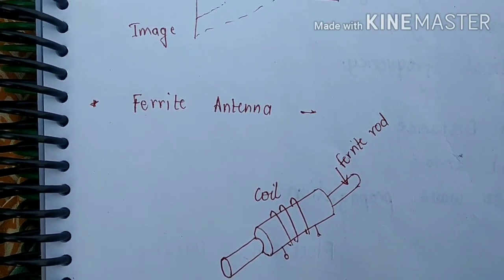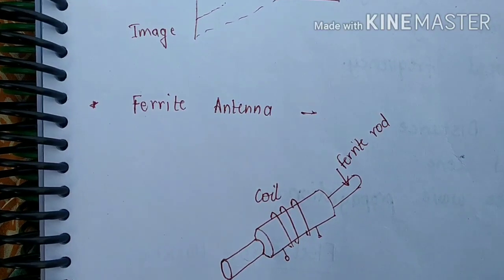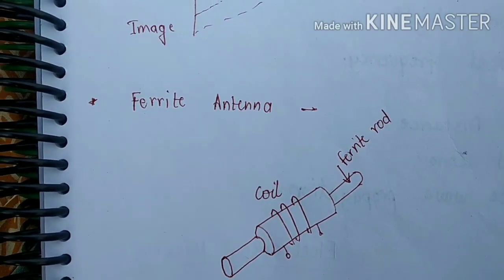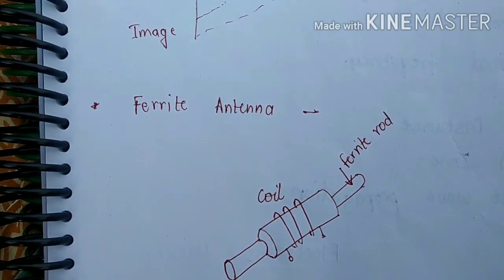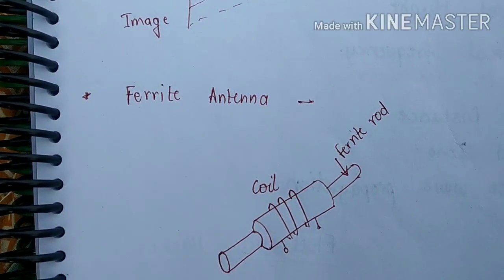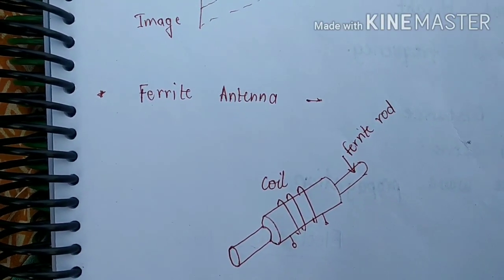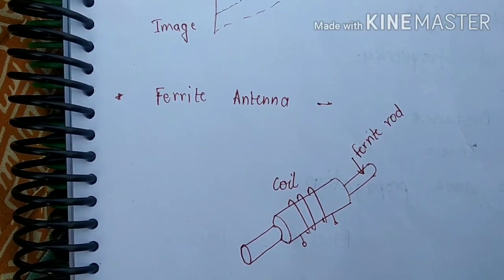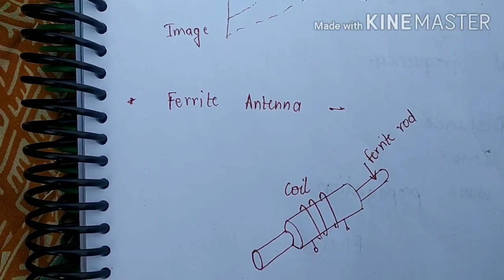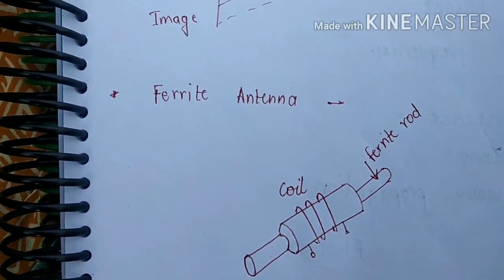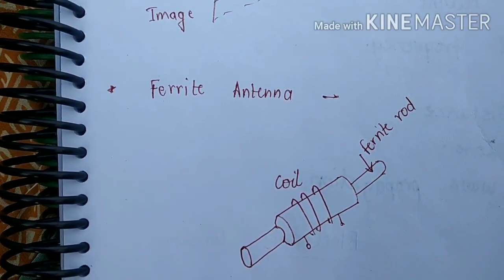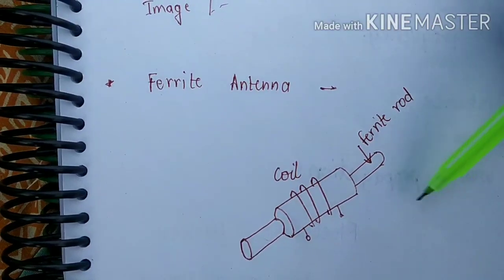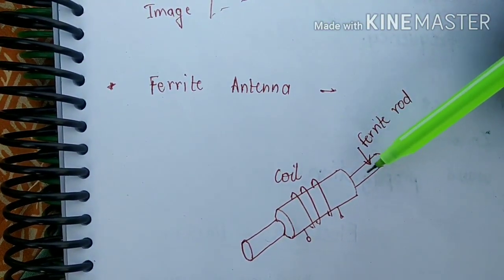Ferrite has the chemical formula MF₂O₄, where M can be different metal ions. Ferrite has both high resistivity and high permeability. Because of high resistivity, eddy current losses are very low at high frequency. The ferrite rod antenna has a rod diameter of 1/4 to 1/2 inch.